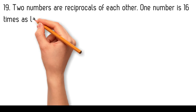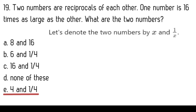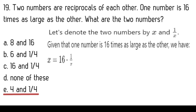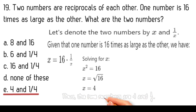Two numbers are reciprocals of each other. One number is sixteen times as large as the other. What are the two numbers? Options: eight and sixteen, six and one-quarter, sixteen and one-quarter, none of these, four and one-quarter. Let the two numbers be x and one over x. Given x equals sixteen times one over x, we get x squared equals sixteen, so x equals the square root of sixteen, which equals four. So the two numbers are four and one-fourth.